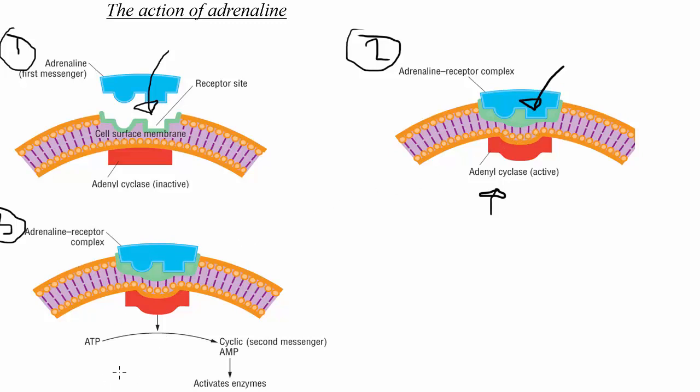Because of that, it causes adenyl cyclase to convert ATP into cyclic AMP or CAMP. That is called the second messenger.